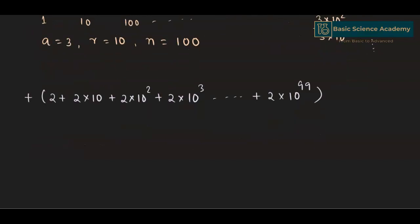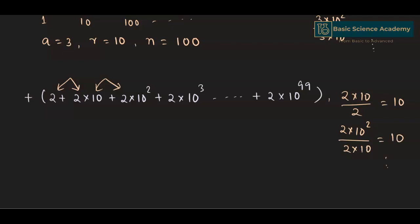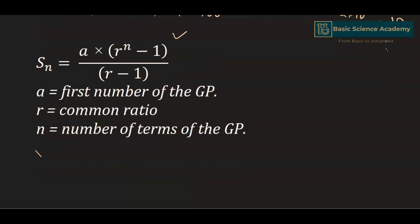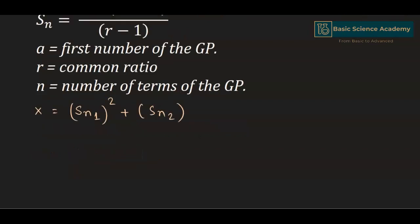For the second series also, the ratio of two consecutive terms is (2×10) / 2 = 10, and for the second and third terms, (2×10²) / (2×10) = 10, and so on. Hence, this ratio is also constant, so this sum is also in geometric progression with first term a = 2, r = 10, and n = 100. The sum of a geometric series is calculated using: Sₙ = a × (rⁿ − 1) / (r − 1). Hence, x equals the square of the sum of the first series, plus the sum of the second series.